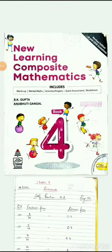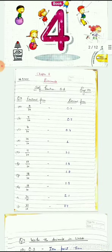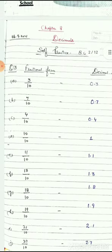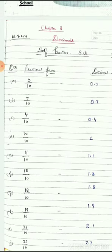Good morning students, I'm Anuradha Gupta here to teach you mathematics of class four. In today's class I will explain a new term: decimals. Let me introduce you to decimals. You have already studied fractions. Here some decimal fractions are given to you: 3 upon 10, 7 upon 10, 10 upon 10, 21 upon 10. These are in fractional form. When you convert these into decimal form, these are called decimal form of fractions.